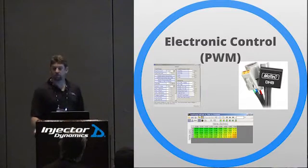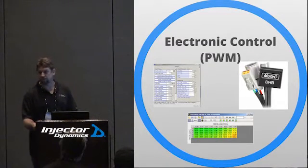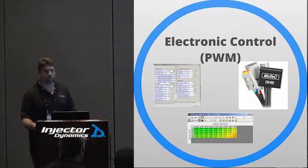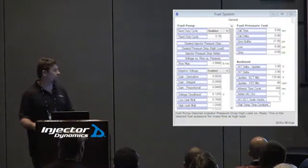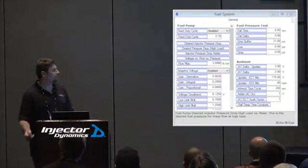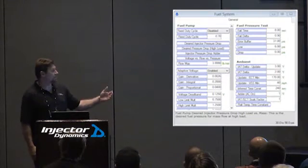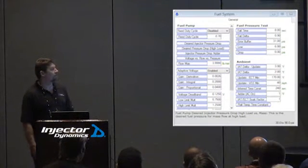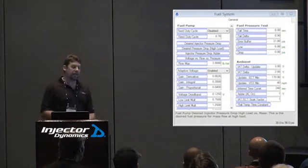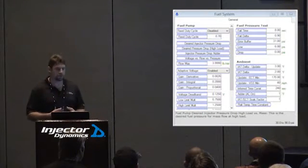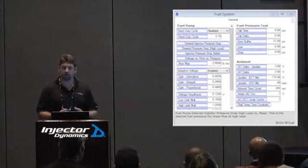That allows us to run a relatively small, well-behaved injector for good idle quality, then crank the pressure up under boost. It's a little tricky. You'll see a number of manufacturers do it - specifically Ford. This is from my car, the 2007 GT500. These are some of the parameters available to that system, and there are tables here that provide a fuel pressure target versus operating condition.